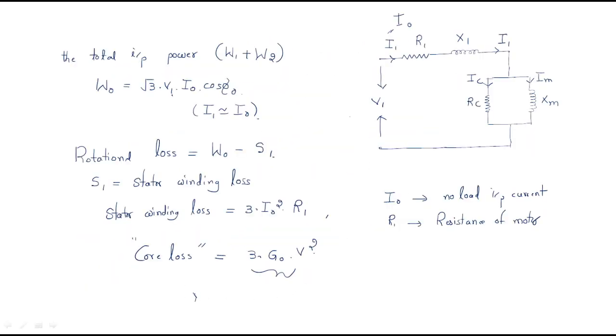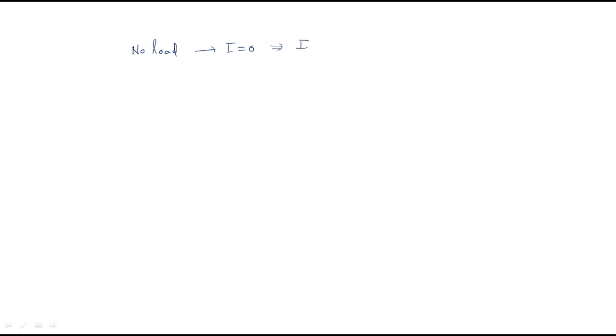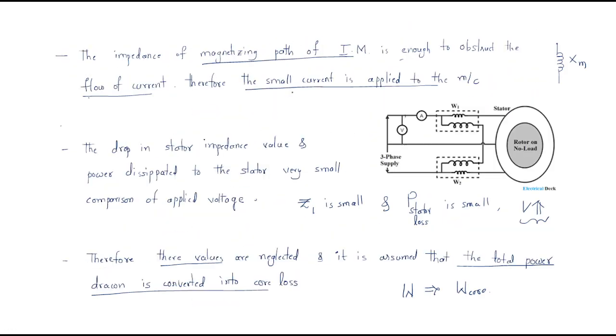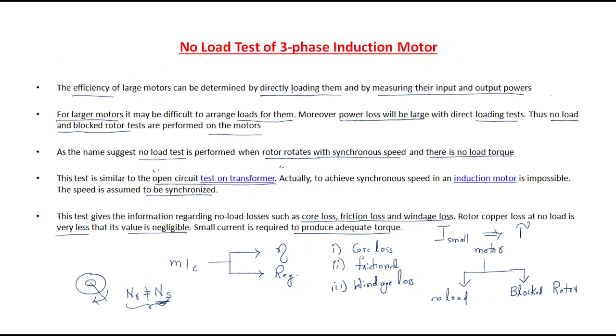To summarize: in the no-load test, current is approximately zero, so I-squared-R loss is also zero. The remaining loss is the core loss. This is the procedure to find the core loss using the no-load test on the three-phase induction motor.